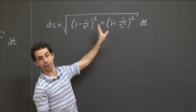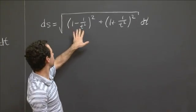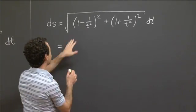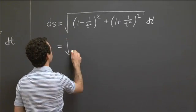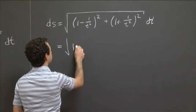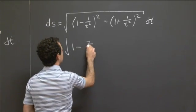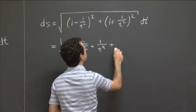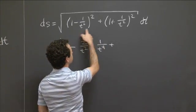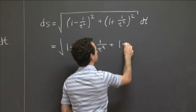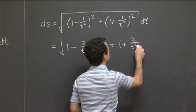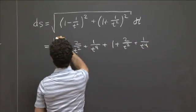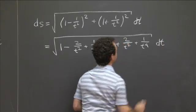OK, and now we can maybe simplify this a little. I would probably expand out at this point. So if you expand this out, the first one is 1 - 2/t² + 1/t⁴, that's the first one expanded out. And the second one, we get 1 + 2/t² + 1/t⁴, dt.